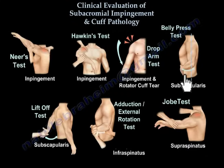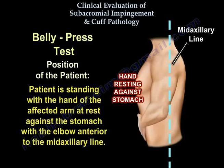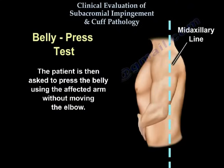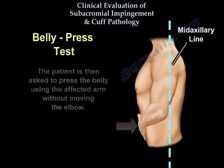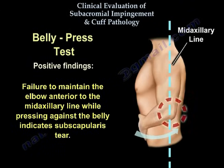Belly press test. This is a test for the integrity of the subscapularis muscle. The patient is standing with the hand of the affected arm resting against the stomach, with the elbow anterior to the mid-axillary line. The patient is then asked to press the belly using the affected arm without moving the elbow. Failure to maintain the elbow anterior to the mid-axillary line while pressing against the belly indicates a subscapularis tear.